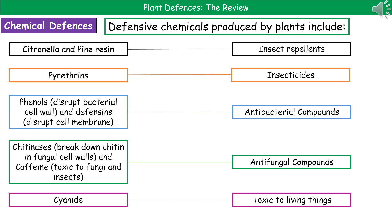The second type of defense mechanism plants have are chemical defenses — defensive chemicals produced inside the plant. There are a few you need to remember by name and by what they do. Citronella and pine resin both act as insect repellants; by repelling insects, they prevent the damage that would allow pathogens to gain entry. Pyrethrins are insecticides that kill any insects that come into contact with them.